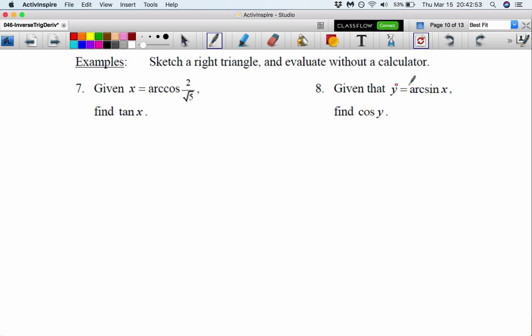Given that y equals arc sine x, find cosine y, cos y. So again, the idea here is that y is an angle. The output of arc sine is an angle, just like the output of arc cosine in this last example was an angle. So this, that's the ratio. And you're like, x isn't a ratio. Well, x equals x over one is a ratio. Which ratio is it? Well, since it's sine, we're talking about opposite over hypotenuse.